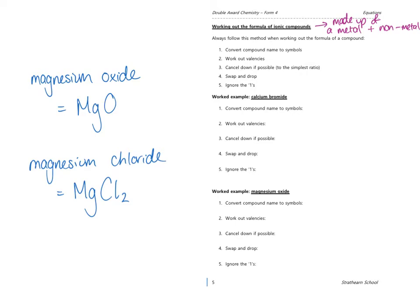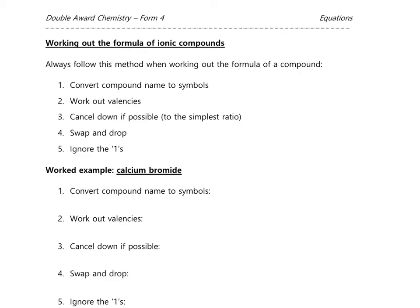Now we don't need to draw out electronic structure to get the formula — there's a quicker way. It's really important when starting out with this method that you take your time and are careful, following the steps one by one. When you start to rush you start to make mistakes, and that can get you into bad habits. I normally call this the swap and drop method, and you'll see what that means in a second.